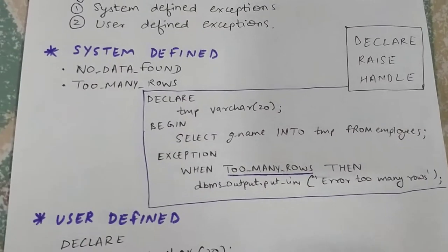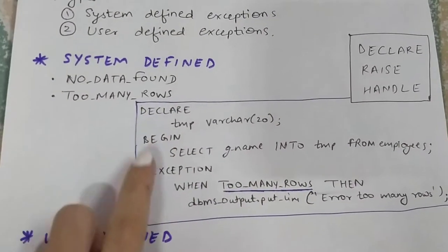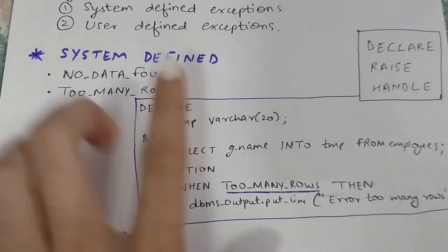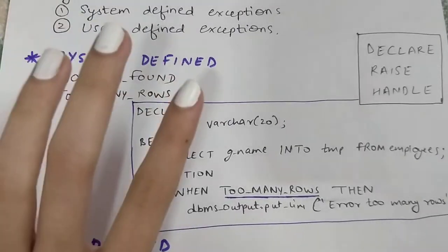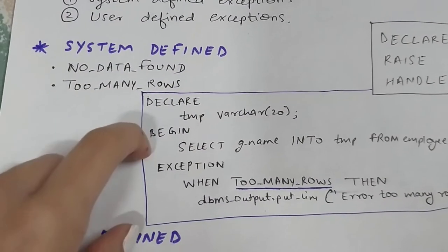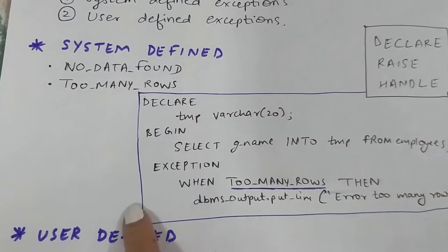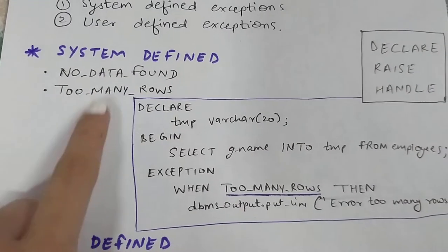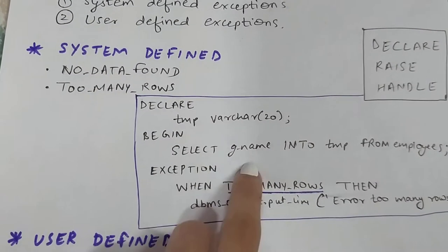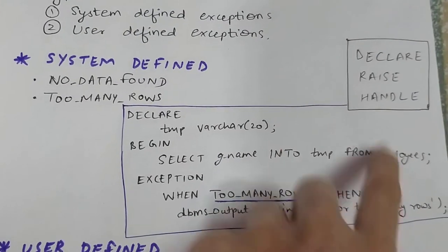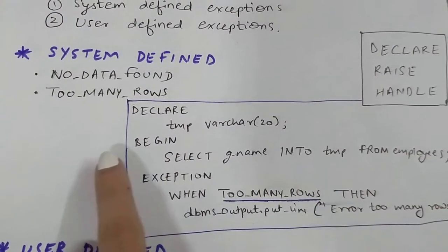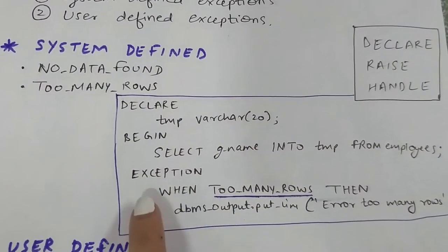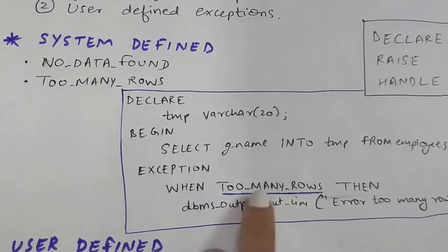So basically this is an example. This program has a DECLARE block where TMP is a VARCHAR variable. Then in the BEGIN block — there's an END at the bottom — we write: SELECT g_name INTO TMP FROM employees. The employees is some table, so basically we are selecting and putting it into the variable TMP.